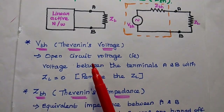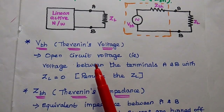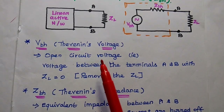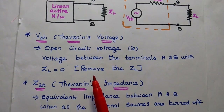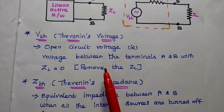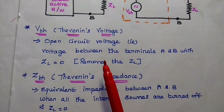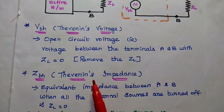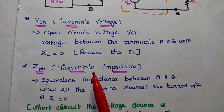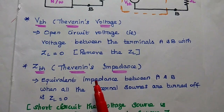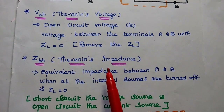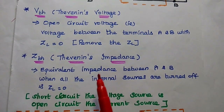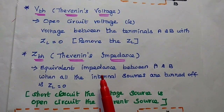We take the voltage between terminals A and B with ZL equal to zero — that is why it is called open circuit voltage. Next is Thevenin's impedance, also called the equivalent impedance.